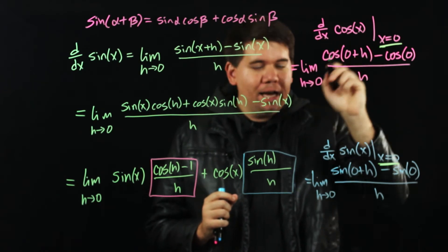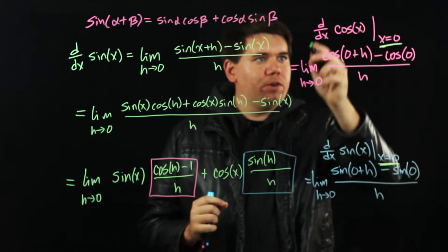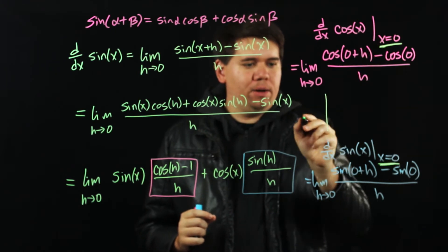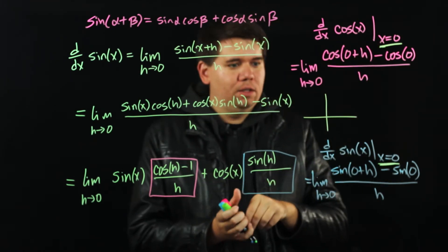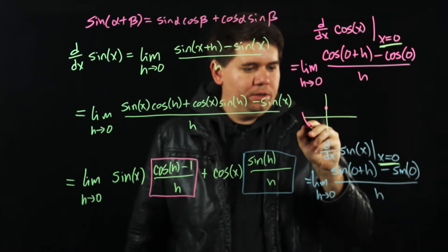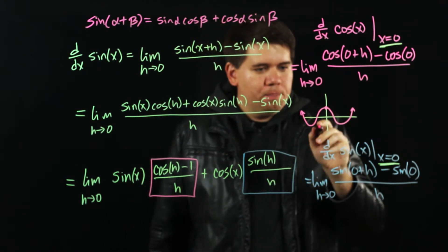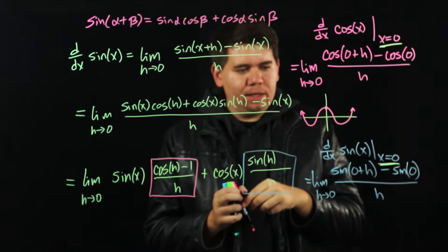Because the derivative at a point is just the slope of the tangent line. For this first example, if you think about the graph cosine of x, you know at 0 it is 1, it's periodic. But at 0, what does the tangent line look like?